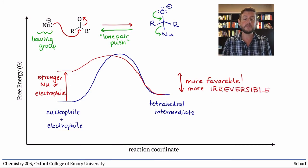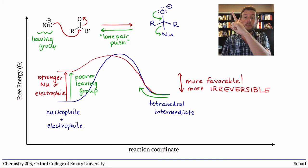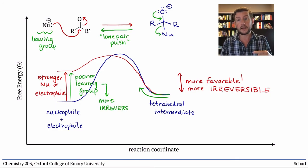We can also think about the reversibility of this step by looking at the backwards reaction. Here, the poorer that nucleophile is as a leaving group, the harder it is to go backward and the more irreversible the forward reaction is.